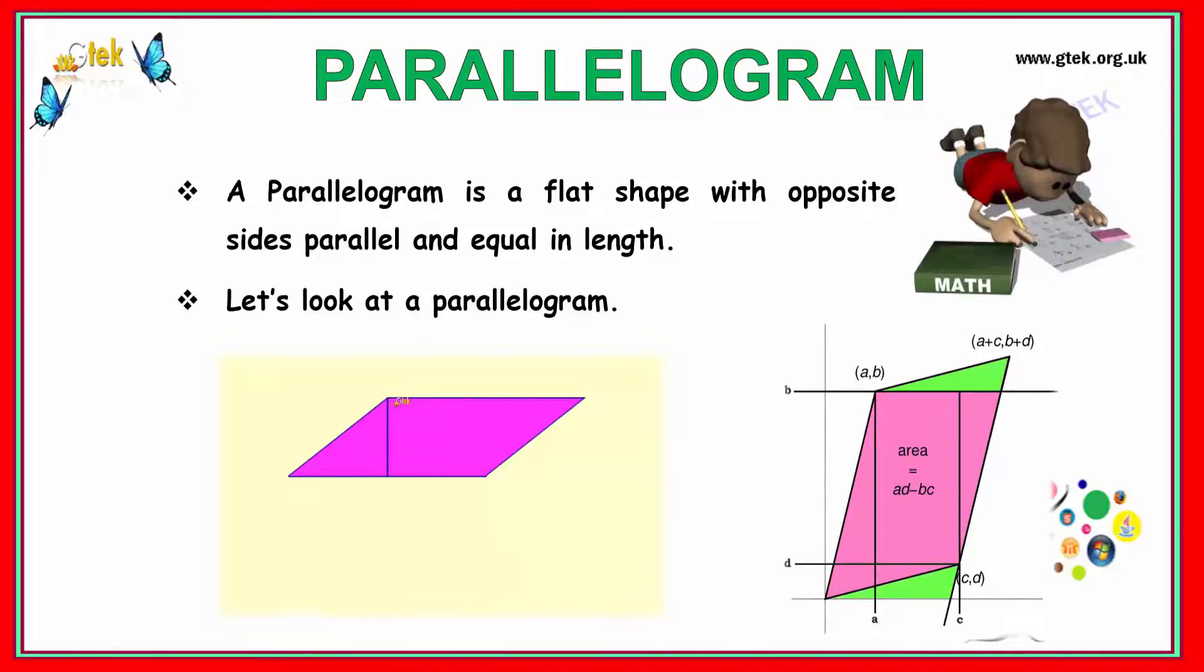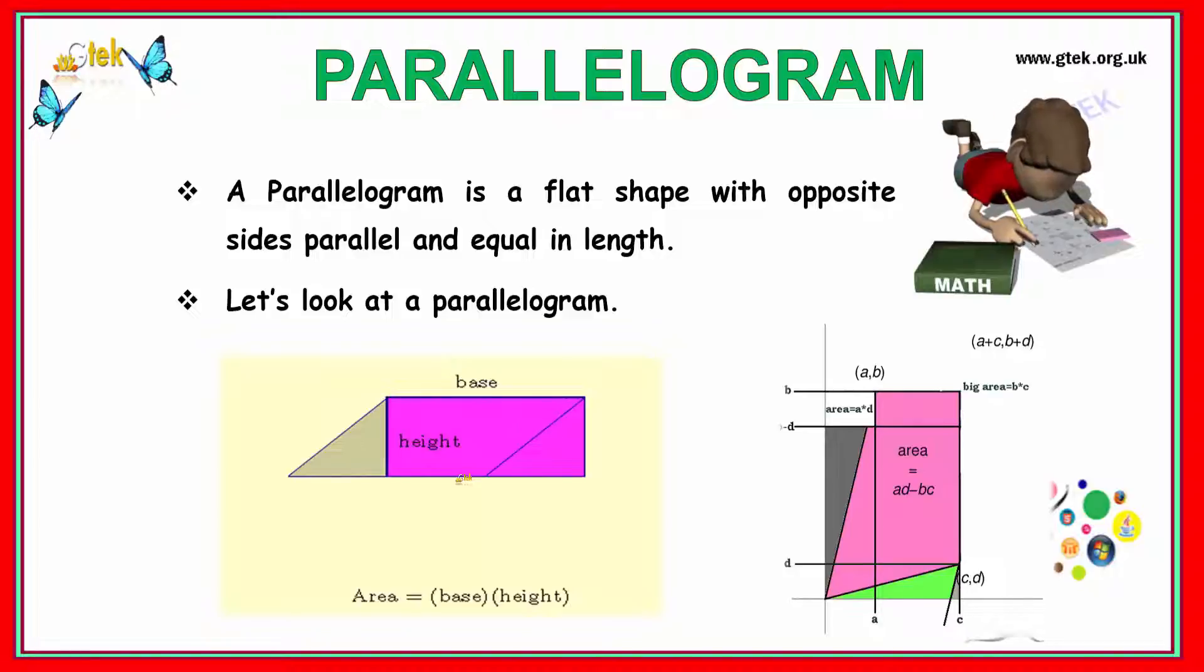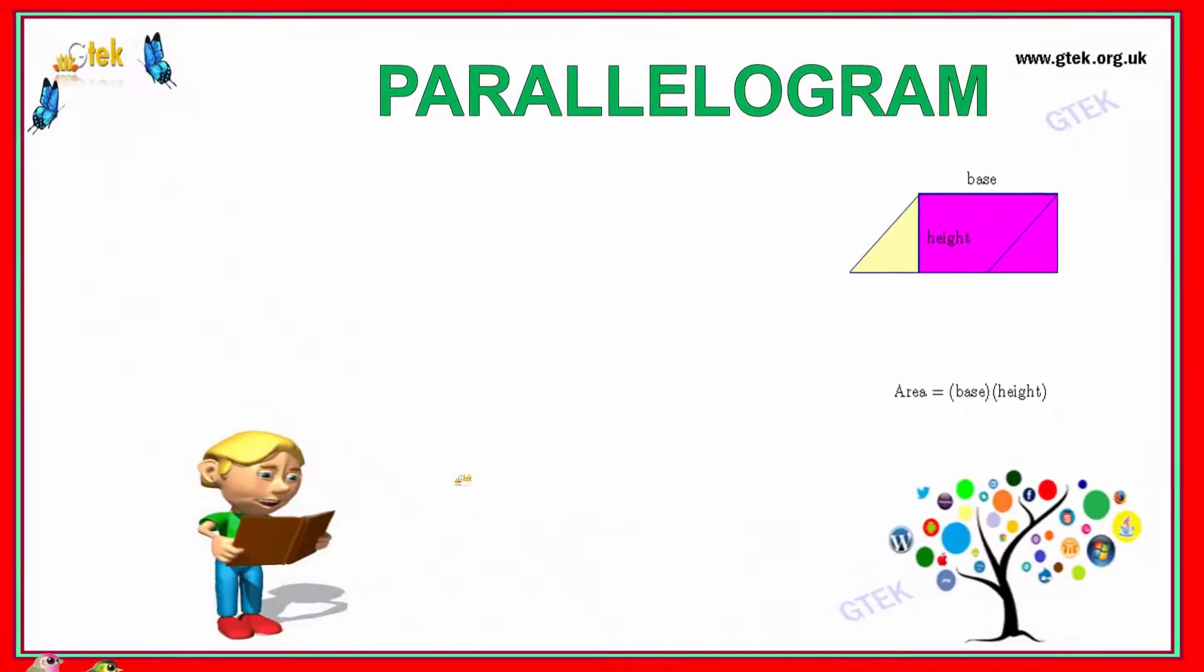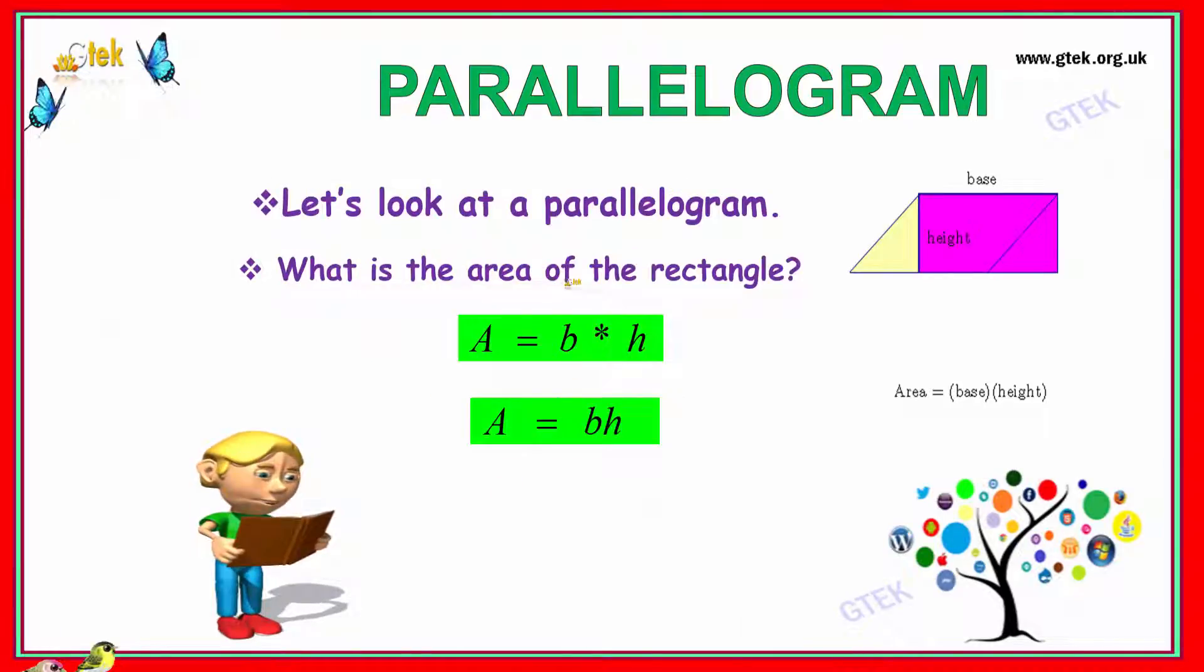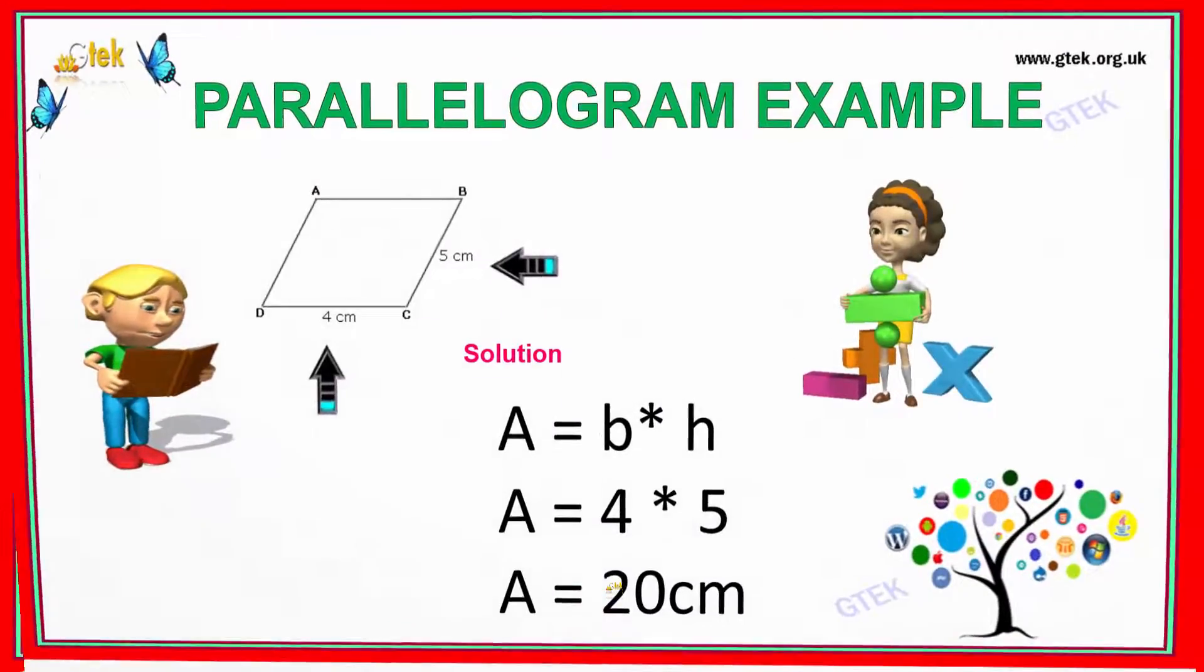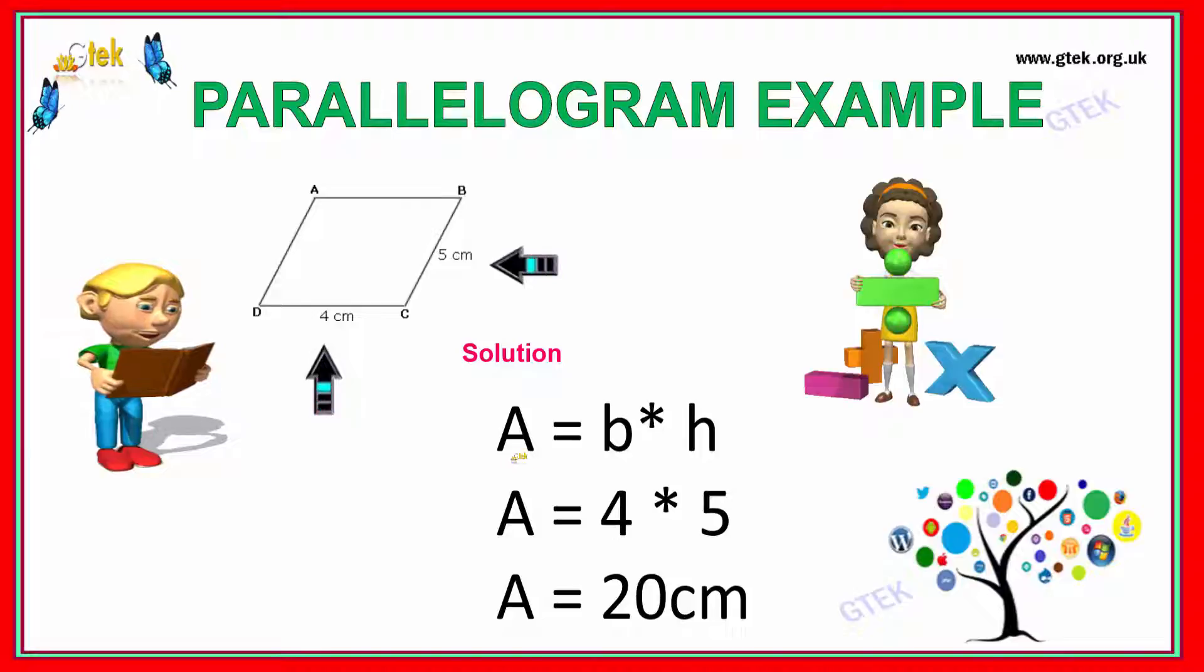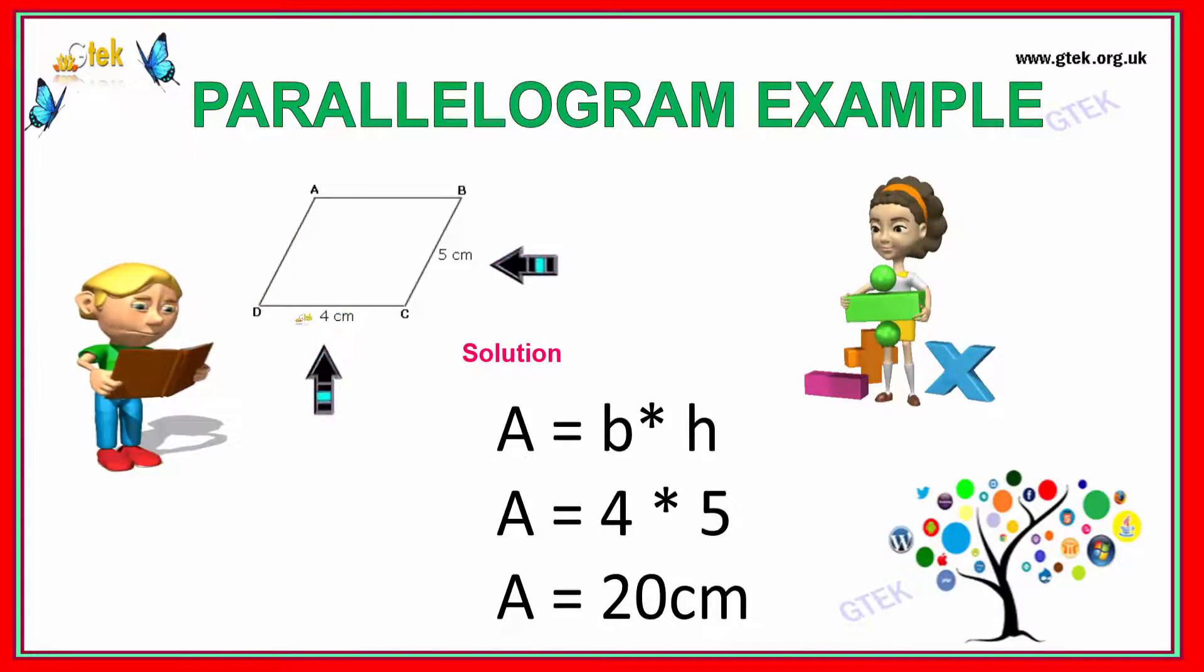This side and this one are equivalent. For the area of the rectangle, it's B times H. The same thing applies to parallelogram: area equals B times H. If we have a parallelogram with length 4 cm and side 5 cm, the area is 4 times 5, which is 20 cm².